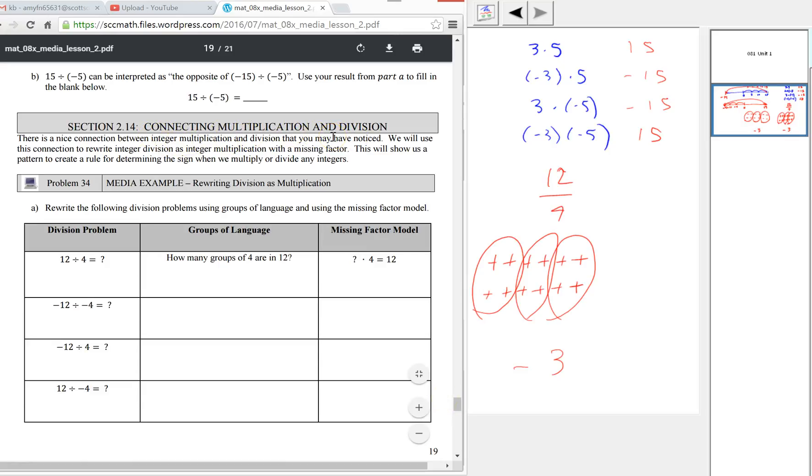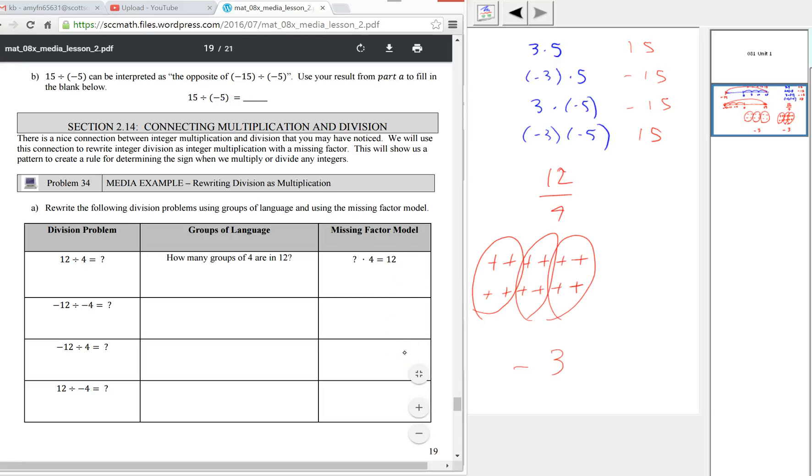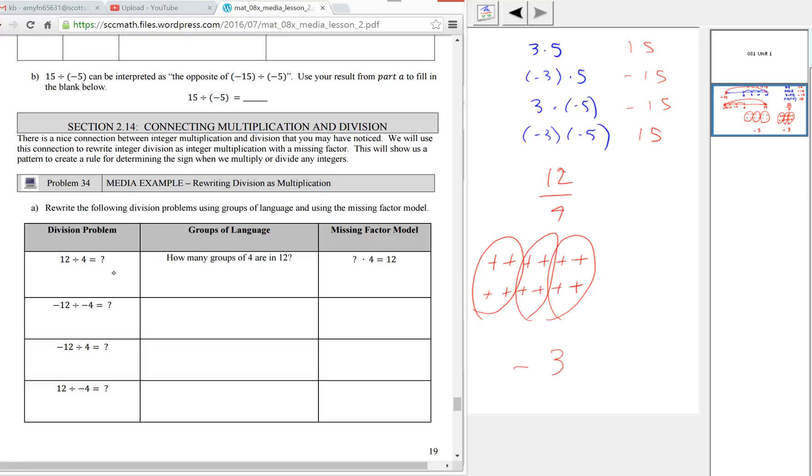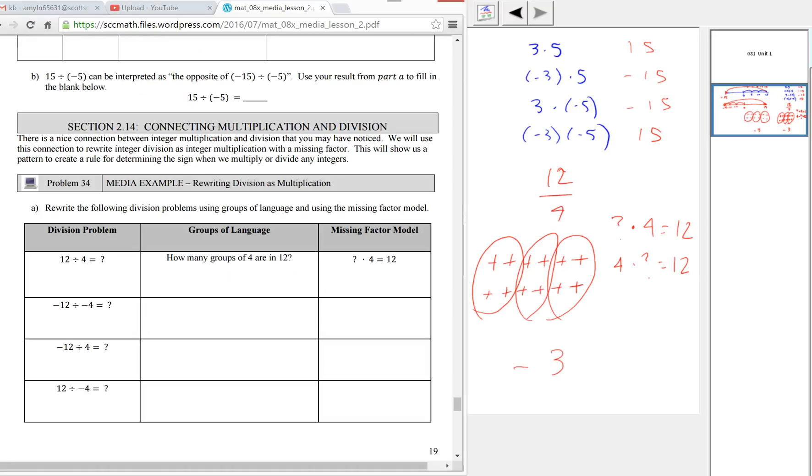Just like we connected addition and subtraction, we want them to start to see connections between multiplications and division. We write the missing factor model. We write this as how many groups of 4 are in 12. Later on, we're going to use copies instead of groups, but groups are good when we're working with whole numbers or integers. This would be how many groups of negative 4 are in negative 12. For the missing factor, I set up the MathAS problem so it would accept either question mark times 4 equals 12, or 4 times question mark equals 12 because we know they're equivalent. But officially, since we're asking how many groups of and we talked about how we want the first factor to be our number of groups, try to get them to write it this way with the question mark first.